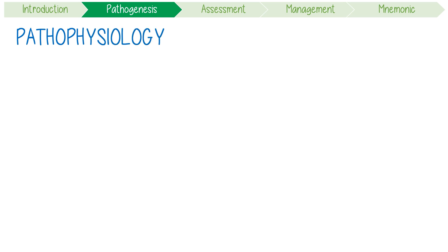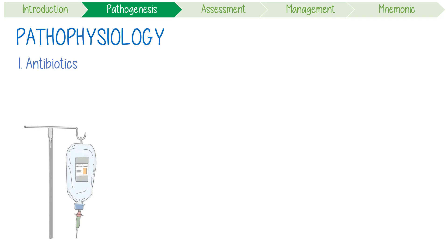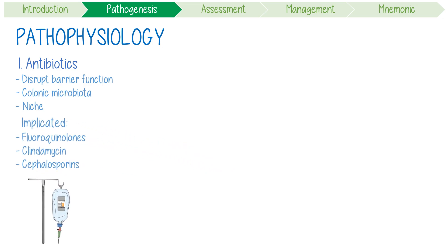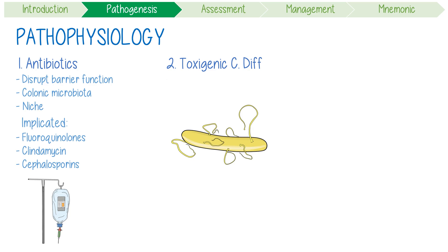Let's focus on the pathophysiology by looking at the three events essential for developing the infection. Firstly, exposure to antibiotics, which can disrupt the barrier function of normal colonic microbiota, providing a niche for the bacteria to multiply. The most frequently implicated are fluoroquinolones, clindamycin, and broad-spectrum cephalosporins. The second essential event is exposure to a toxigenic form of C. diff, most often acquired in hospital, with the rate of faecal colonization increasing proportionally with the length of stay.